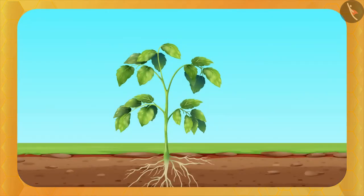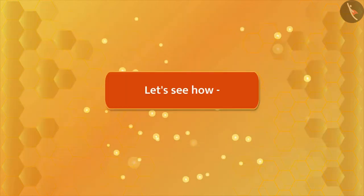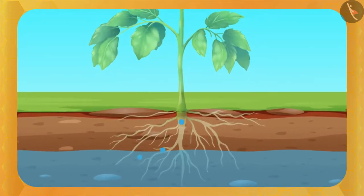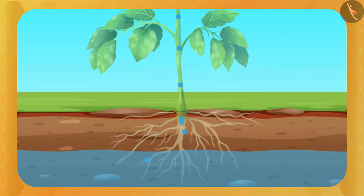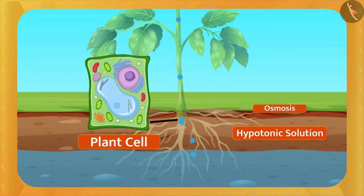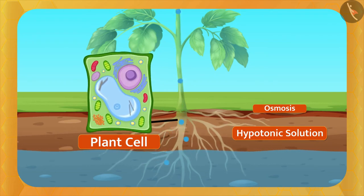Through the osmosis process, plants absorb water from the soil. The soil contains water with dissolved salts that are important for plants. The amount of water in the root cells is less than in the ground, so ground water acts as a hypotonic solution. Osmosis causes ground water to pass through the plasma membrane of the root cell into the cell, making the cell swell and become thick — this is how osmosis transports water and salts in plants.